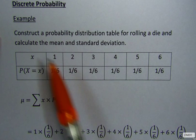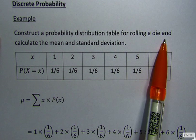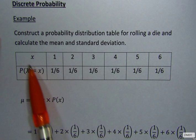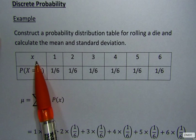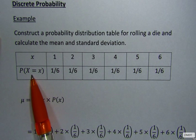Our question reads, construct a probability distribution table for rolling a die and calculate the mean and standard deviation. So this is our table. The top row is our x and the second row is on probability.